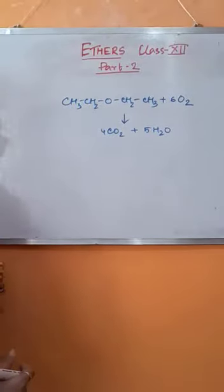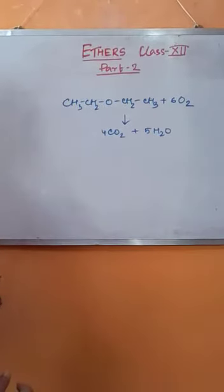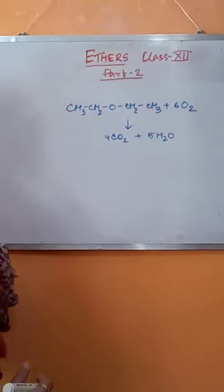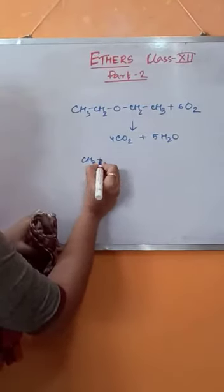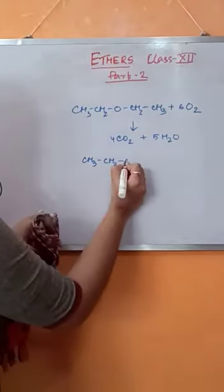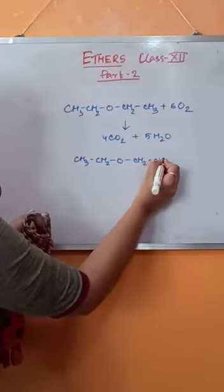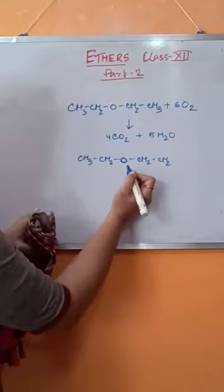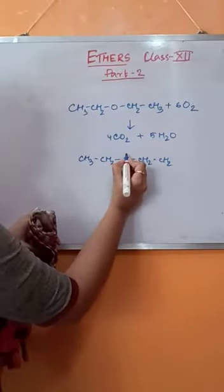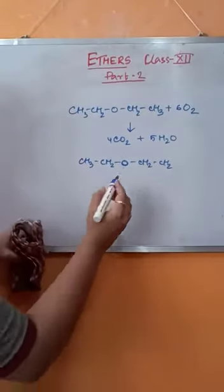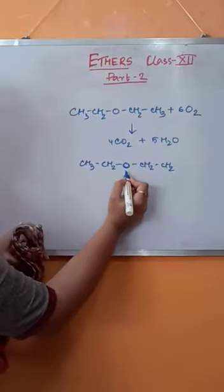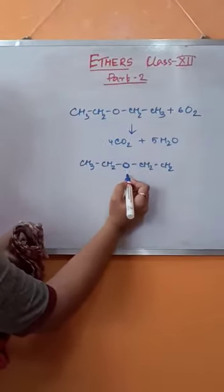The next category of reactions are those which involve the ethereal oxygen. The ethereal oxygen consists of two lone pairs of electrons, and since it consists of two lone pairs of electrons, this can act as Lewis bases.